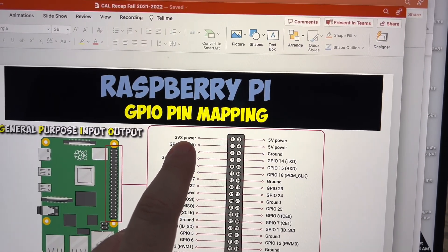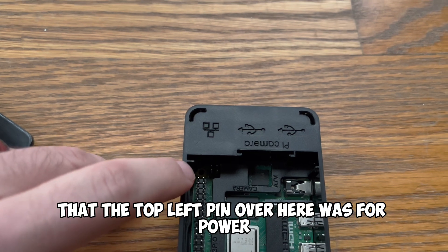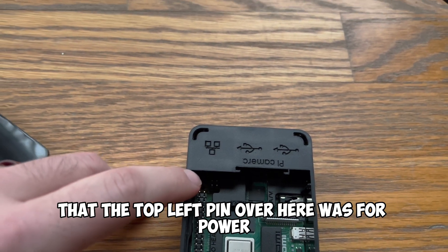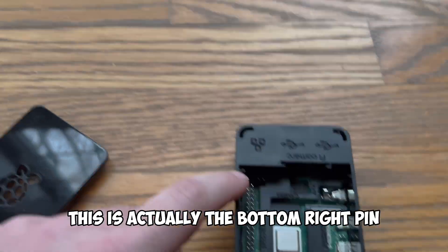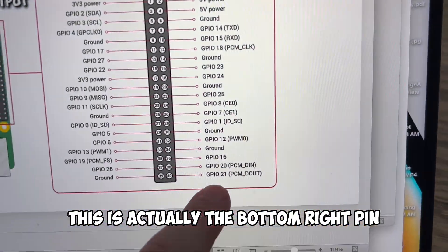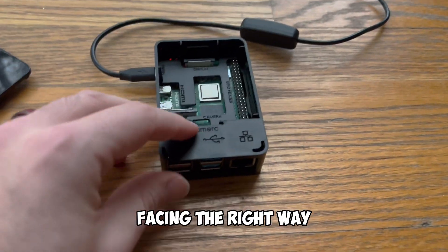so that when we're looking at these pins we can tell that the top left pin is the top left pin of 3.3 volts of power. If we had this the wrong way we might think that the top left pin over here was for power but this is not this pin. This is actually the bottom right pin which is not going to be helpful. So let's make sure that we have this facing the right way.